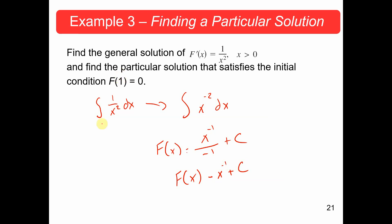Now, we're given f of 1 equals 0. So, we get 0 equals negative 1 over 1 plus C. Therefore, 0 equals negative 1 plus C. Add 1, C equals 1.